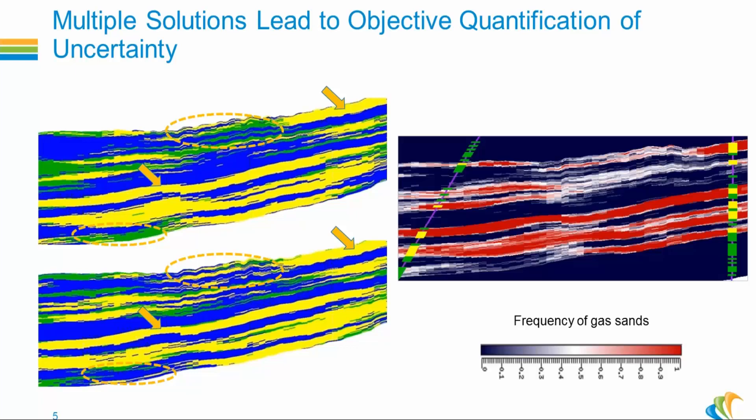So from all your realizations, you can compute the frequency of a given facies type. For example, here the frequency of that yellow facies, which is the gas sands. In this example, the wells were not used as a constraint in the inversion. They are blind wells here. So you can see that the match is really good between the actual well values and the frequency of gas sands given by the multiple realizations of the geostatistical inversion. The match is good that indicates that you can trust the results far away from the well.